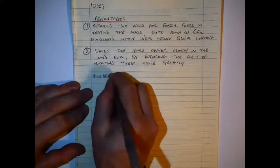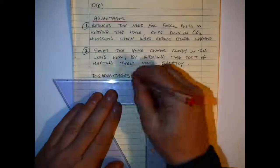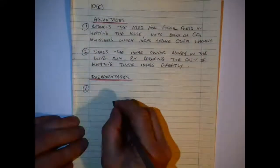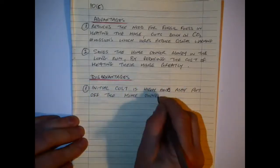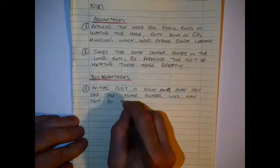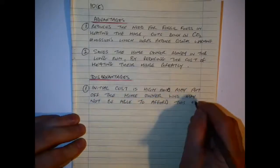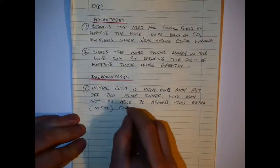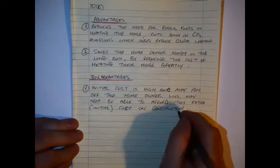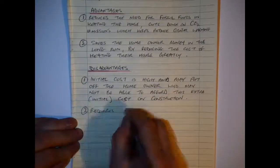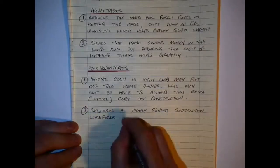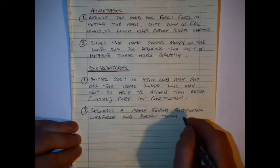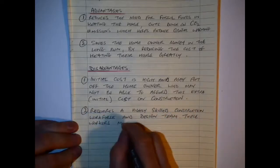So the advantages are it is very obvious to reduce the need for fossil fuels in heating the house. It cuts down in CO2 emissions which helps to reduce global warming and it saves the homeowner money in the long run by reducing the cost of heating of their house greatly. Disadvantages are that initial cost in any passive build is considerably higher, but over time it reduces then in the cost. So it might not be affordable to everybody starting out. And then it requires a highly skilled construction force and design team and these workers might be hard to get and more costly too.